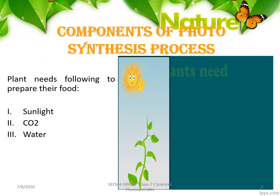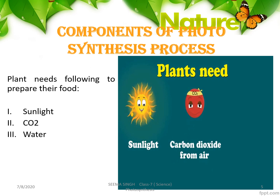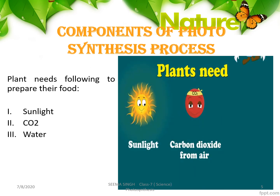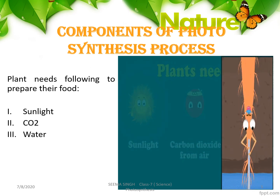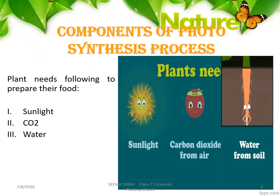Now let's understand what are the various components that are necessary for the process of photosynthesis to occur. The major three things that are important for photosynthesis are sunlight, carbon dioxide, and water. Let's try to understand how the plant gets all these things and from where they are obtained.